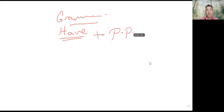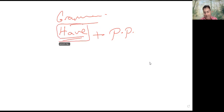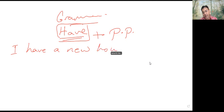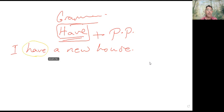When I say 'I have a new house,' the word 'have' here is used as a main verb with real meaning. It's called a content word — يعني كلمة ليها معنى رسمي.